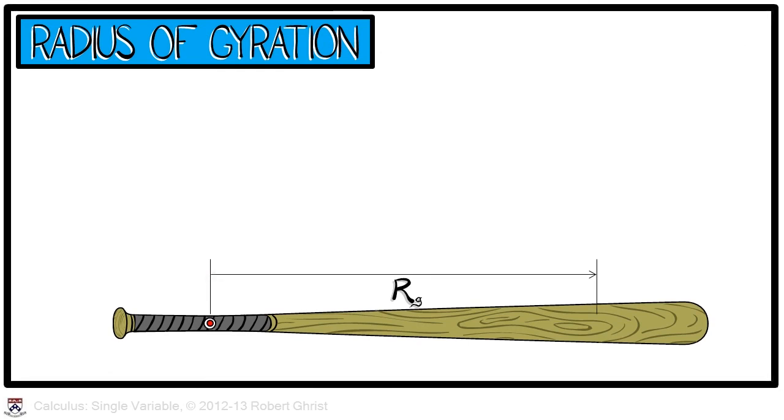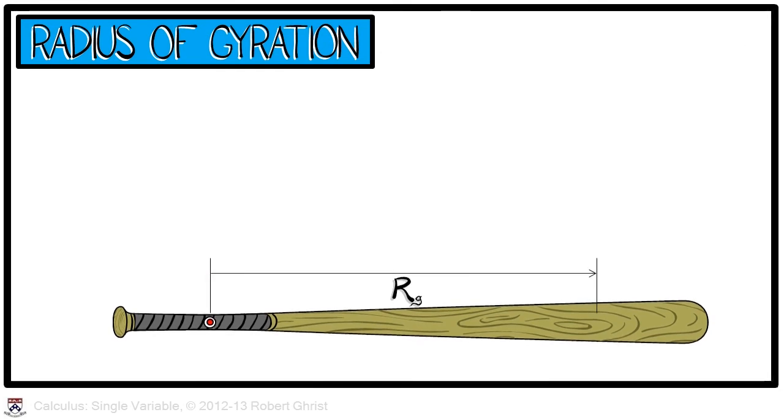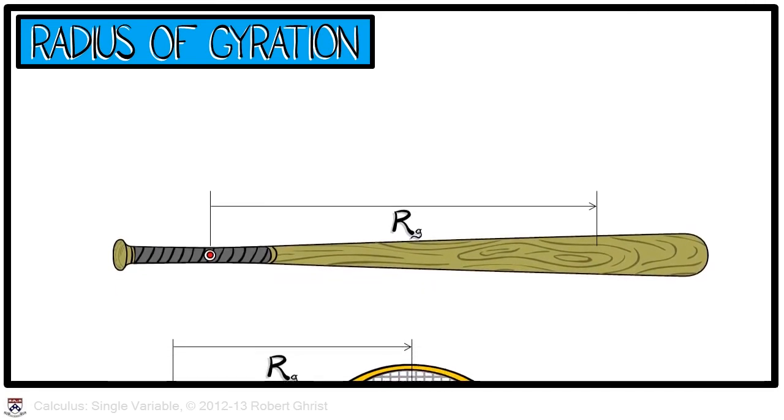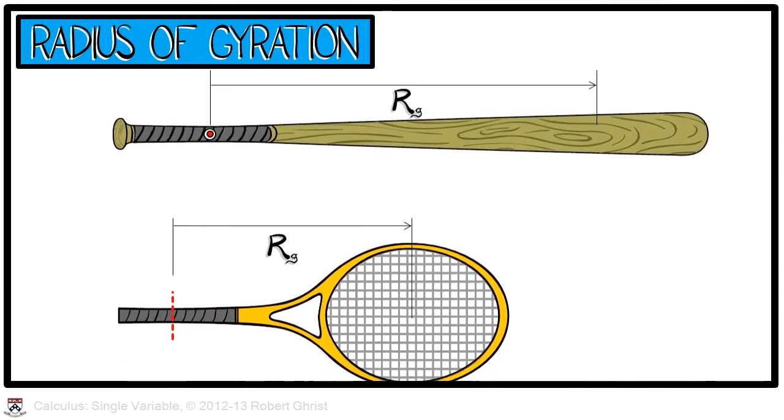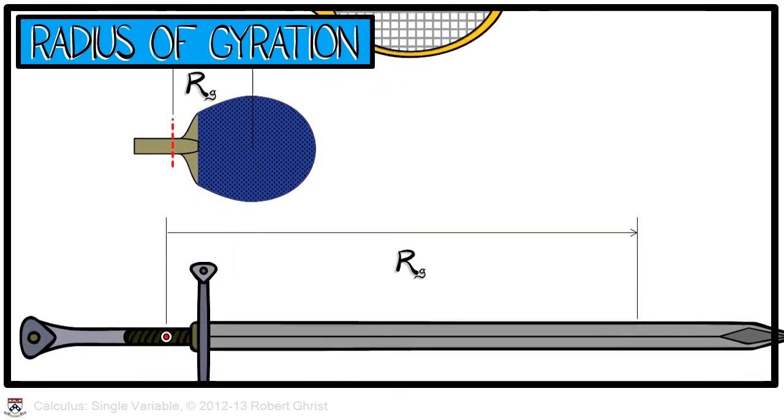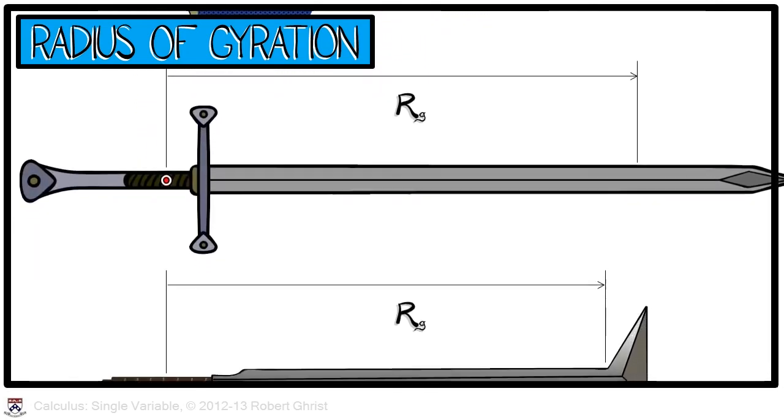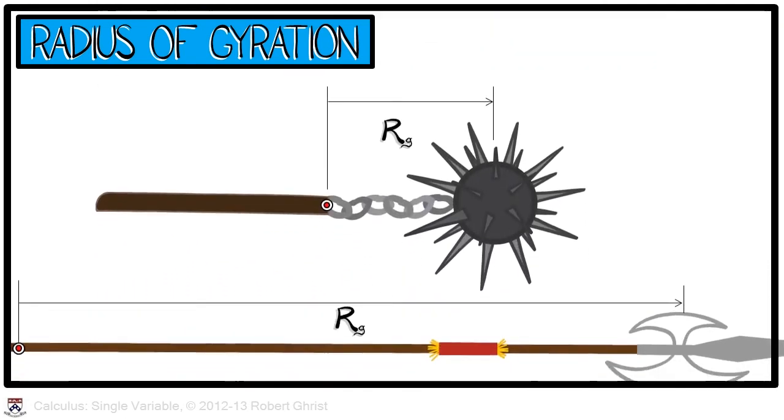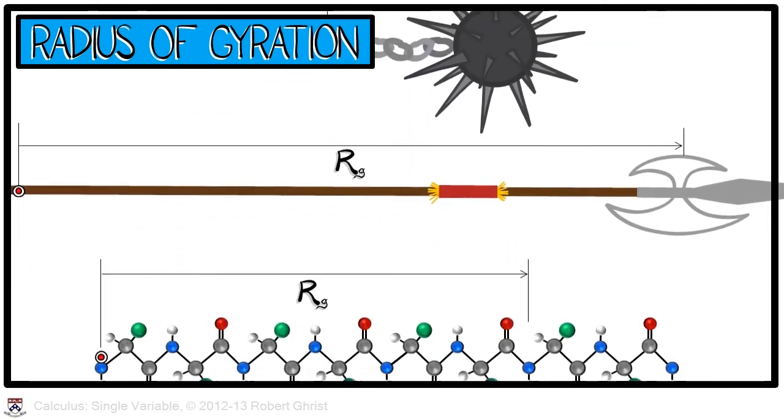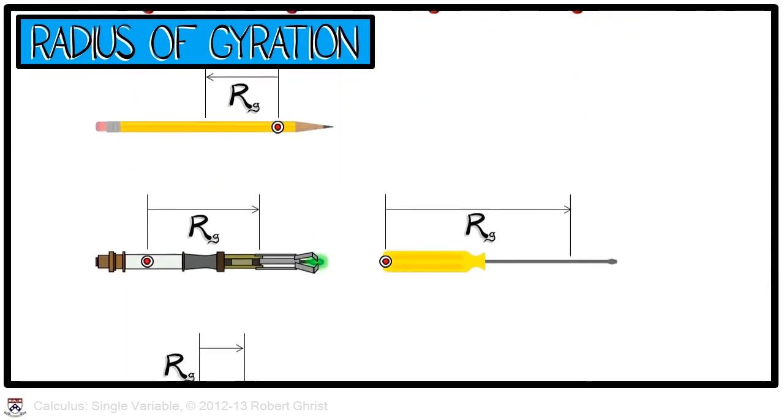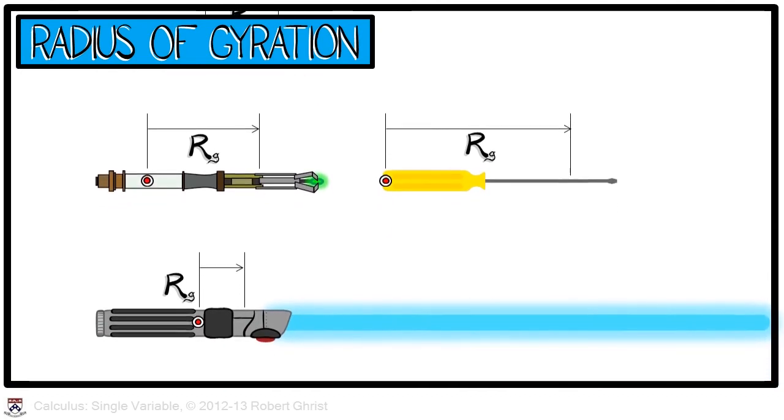It's perhaps worth taking a moment or two and thinking about what this radius of gyration means and what different examples have. If you look at a tennis racket or various kinds of sports objects, in fact, if you go through your house and just pull out random items that you have lying around, you can physically measure the radius of gyration and start to get a feel for how different objects have their masses distributed in different ways.